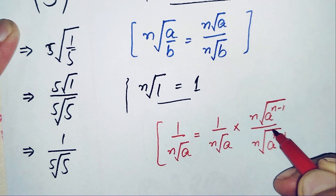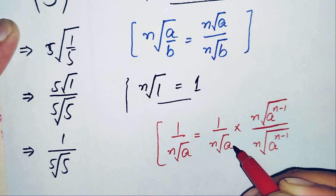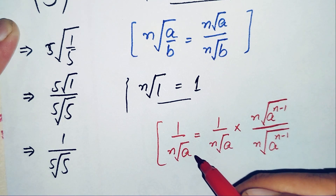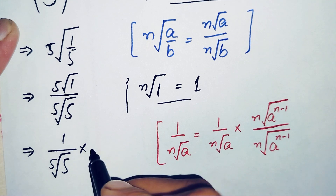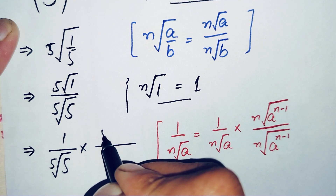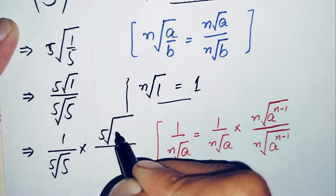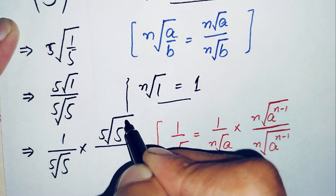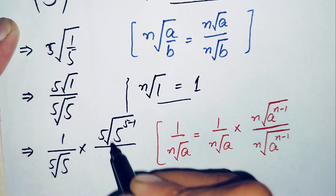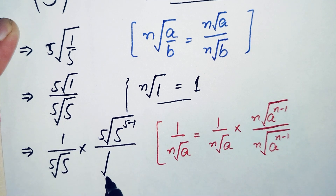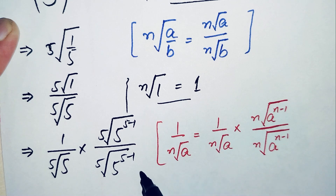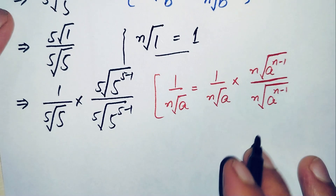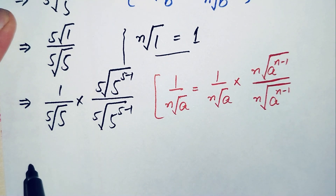From there we can cancel the two matching terms and get back to our number. Using this result, we multiply the equation by the fifth root of 5 raised to power 5 minus 1, and also divide by the same, so the numerator becomes the fifth root of 5 raised to power 5 minus 1.